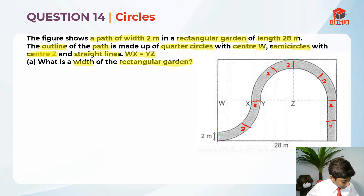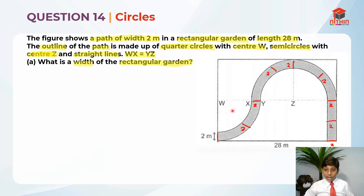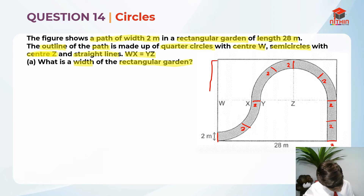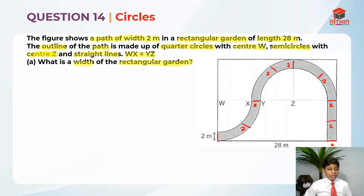This is a very important notice that will help us solve this question later on. We have analyzed the width, and they are asking us to find the width of the garden — the rectangular garden's width, which is basically the breadth. They are asking us to find this big area over here. Now that we have analyzed the figure a little bit more, let's move on to solving the question.